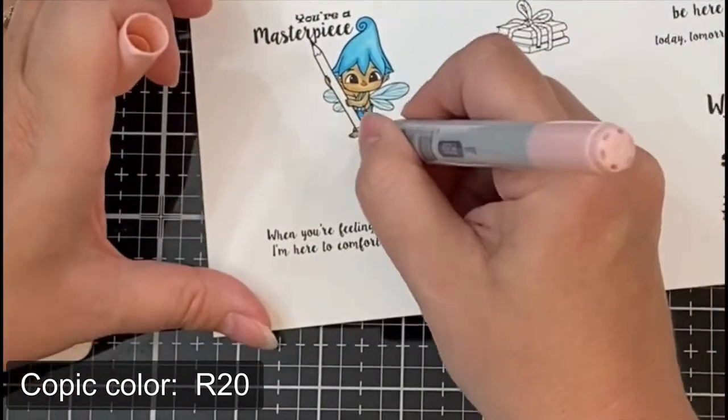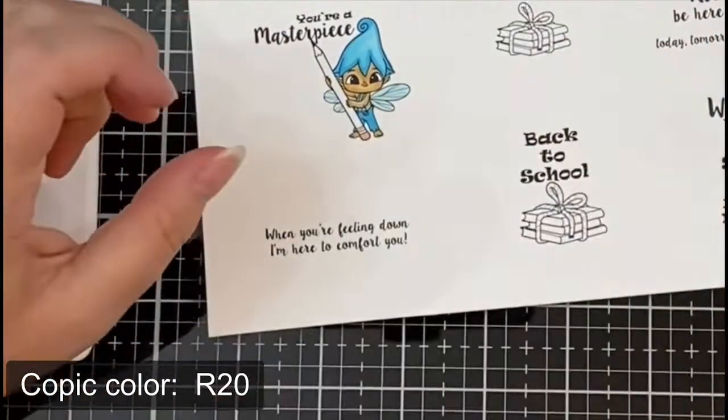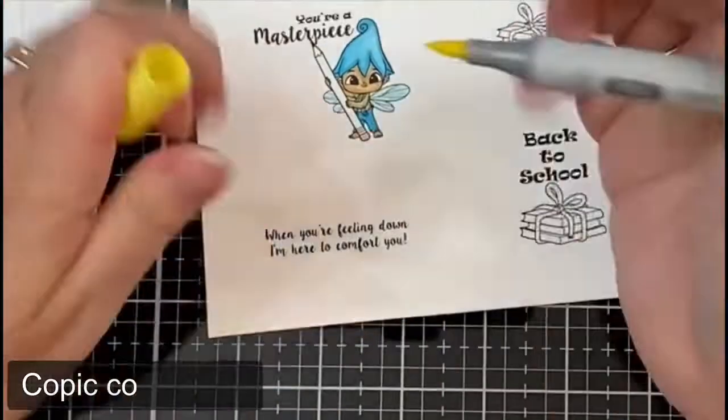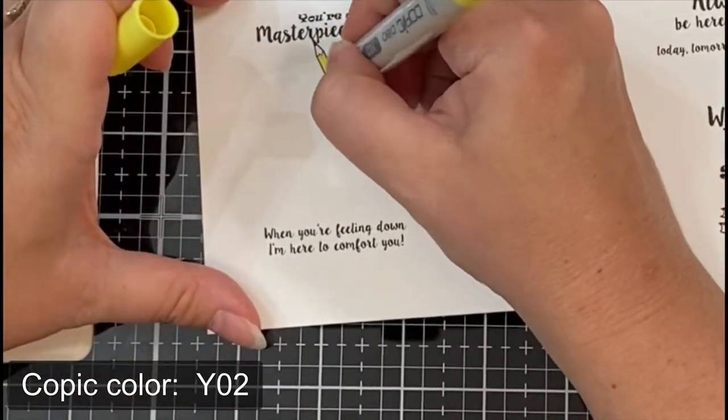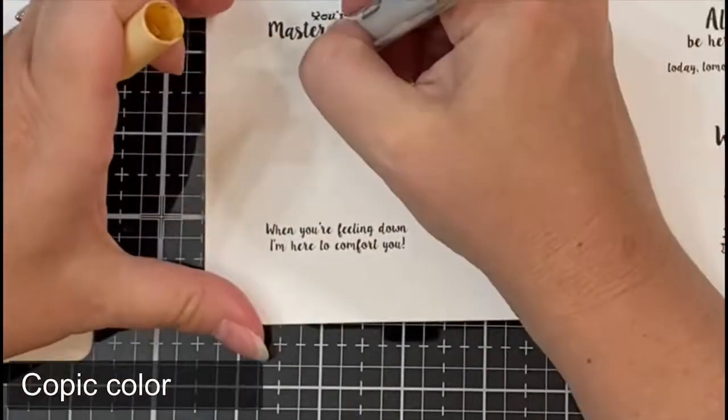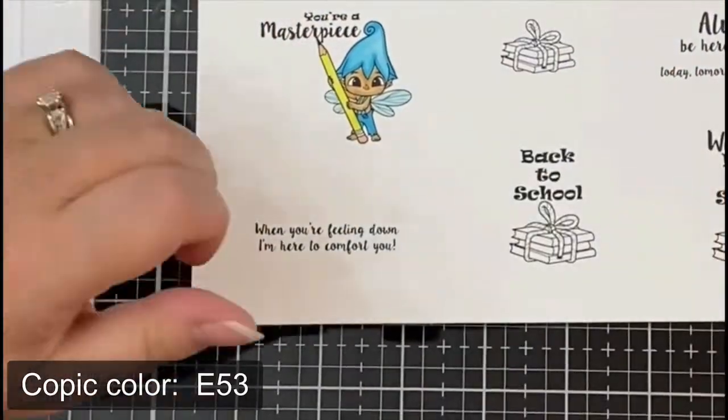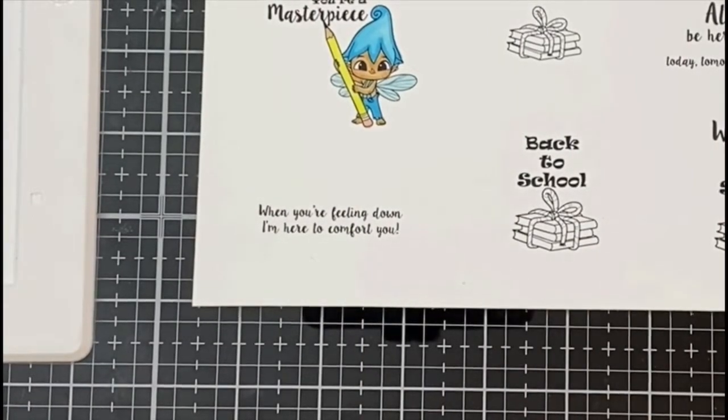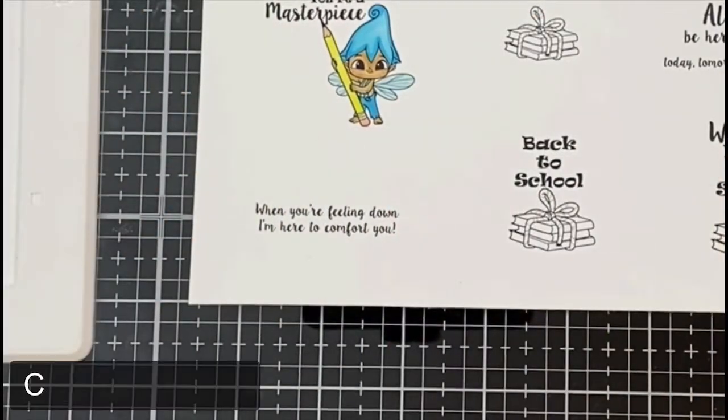And now for his wings I used BG000 and then I colored his overalls with that same BG05. I added R20 to his cheeks and I used that on the pencil eraser, and then for the pencil I used Y02, and then E53 for the top, and then C3 which is a gray color for the metal piece at the bottom of the pencil.